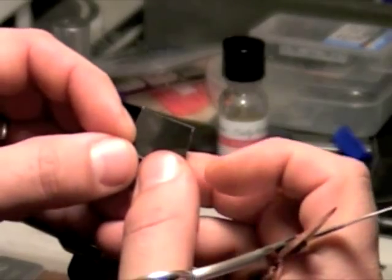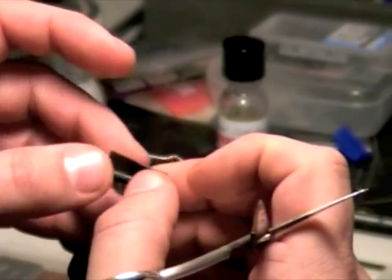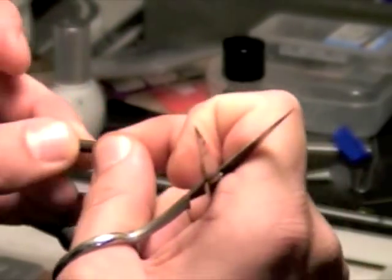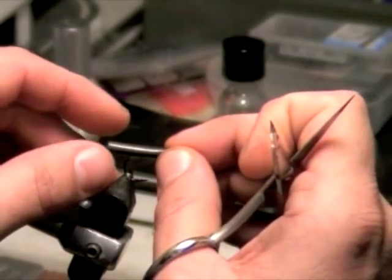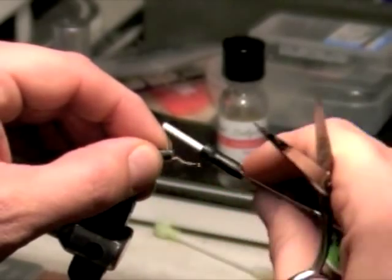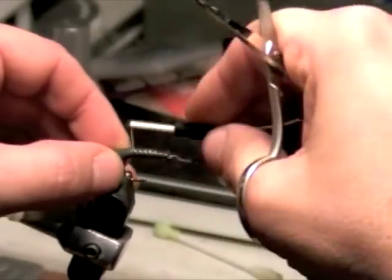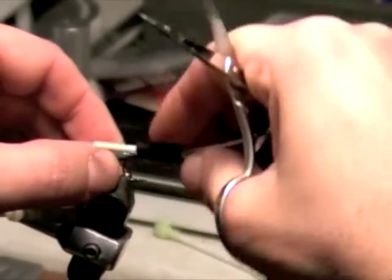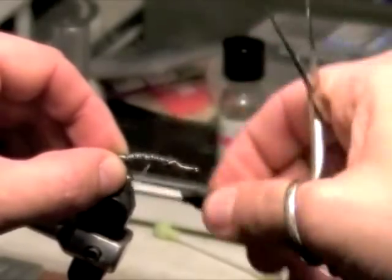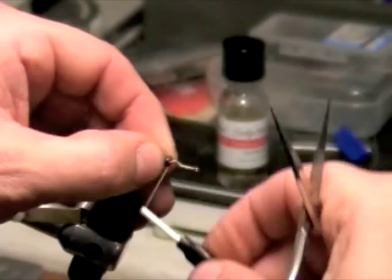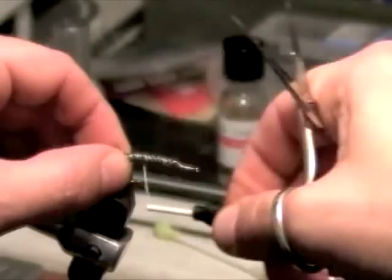Then you're going to take it and start rolling it up. Once you have that done, just like so, you're going to hold that in place and start wrapping it in. Like I said, you're going to wrap this going slightly down the bend. Then go ahead and come back forward.